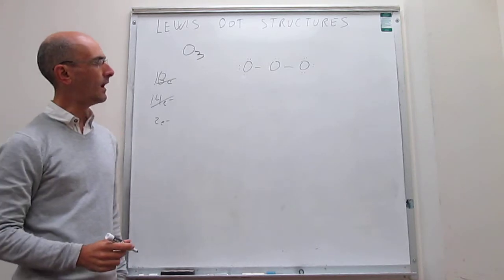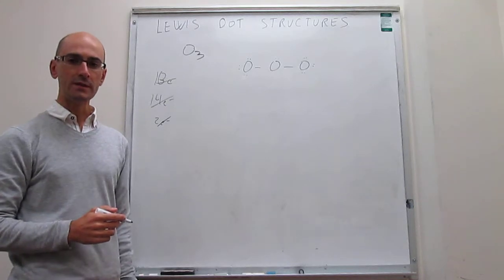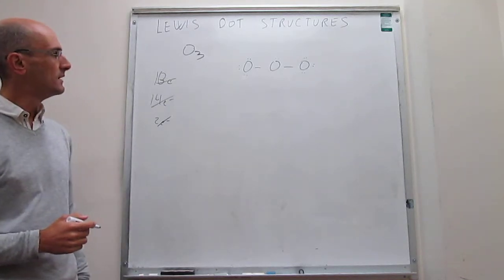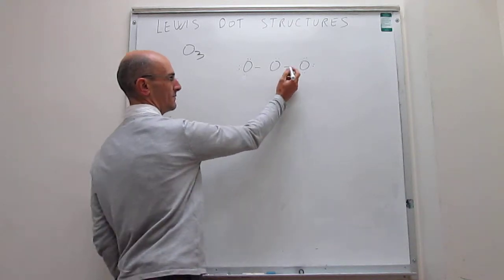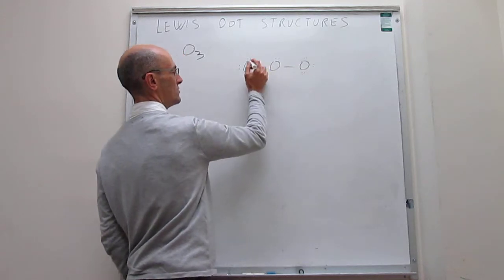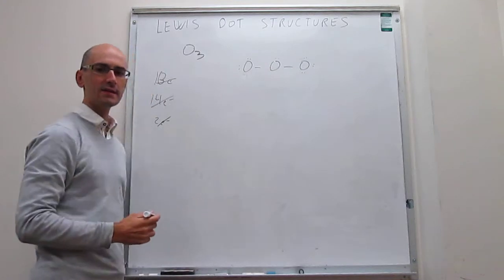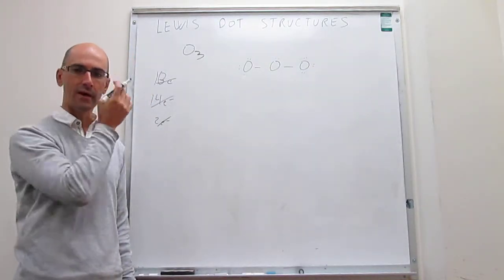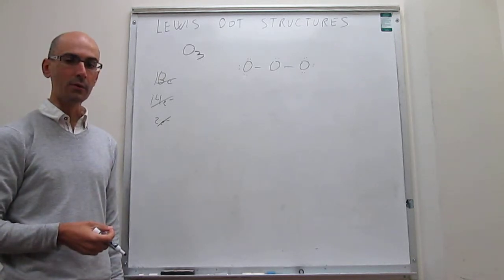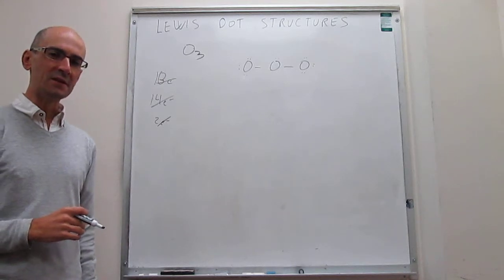Now that all valence electrons are placed, we verify whether we have octets for all atoms in the structure. The terminal atoms each have an octet — two, four, six, eight — but the central atom only has six electrons. So we are missing two electrons on the central atom and need to complete its octet without jeopardizing the octets of the terminal atoms.